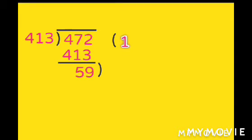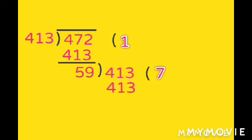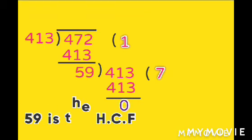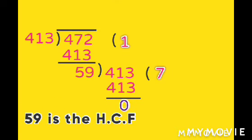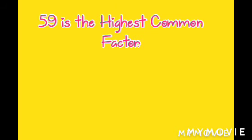413 into 1 is 413. Subtract 413 from 472 to get 59. On the left side, the nearest number is 413. Put 413 inside the two lines. 59 into 7 is 413, and 413 minus 413 is 0. The nearest number on the left side is 59, so 59 is the highest common factor.